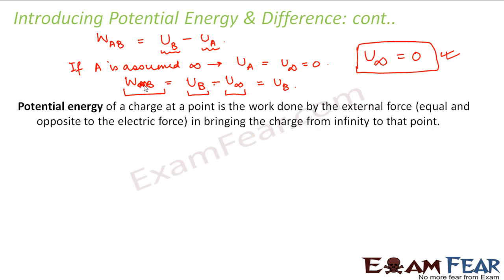This is how we define potential energy: potential energy of a charge at a point is the work done by an external force equal and opposite to the electric force — that is the force due to the electric lines of force — in bringing the charge from infinity to that point.